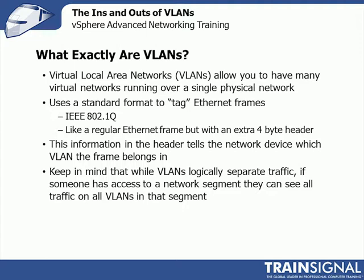VLANs use a standard format to tag frames. An Ethernet frame is tagged with a VLAN using the industry standard IEEE 802.1Q — it's like a regular Ethernet frame but with an extra 4-byte header designating which VLAN it belongs to. Going back to the security discussion, what's to stop someone from hooking up a computer and forging frames with fake VLAN headers to send things to a different VLAN? It's very possible, and that's one reason you want to limit which VLANs can be sent and received on a switch port. If that port doesn't talk on VLAN 11 and someone tries to forge a frame on VLAN 11, the switch will drop it.